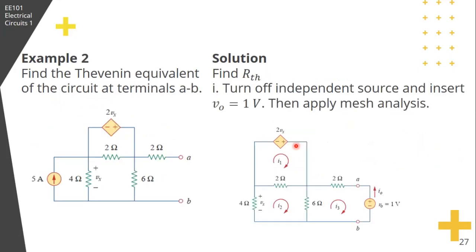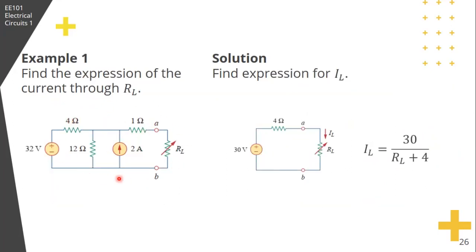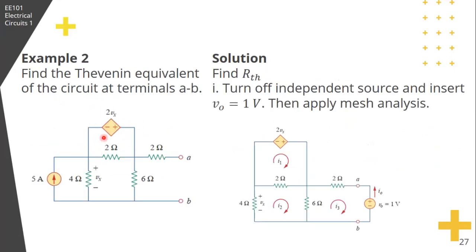Another example. This one has dependent sources. Still, let's find RTH. We kill all the independent sources, then insert V sub O to excite the circuit. The independent source becomes open circuited, so that part is removed.